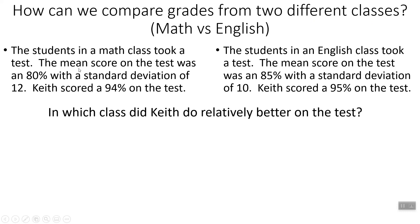The students in a math class took a test. The mean score for the test was 80% with a standard deviation of 12. Keith scored a 94% on the test. The students in an English class took a test. The mean score on the test was 85% with a standard deviation of 10. Keith scored a 95 on that test. So if we just look at the test grades on their own, we'd say 94 in math and 95 in English — so it seems like 95 is a little bit better than 94.